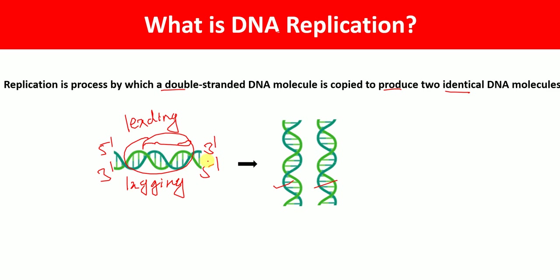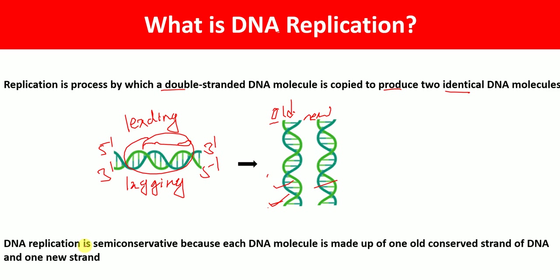DNA replication is called a semi-conservative process because in the newly synthesized DNA molecule we have one old strand and one new strand. Each DNA molecule is made up of one old conserved strand of DNA and one new strand of DNA. That's why it is semi-conservative — meaning half-conservative.